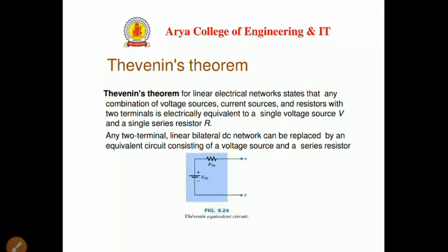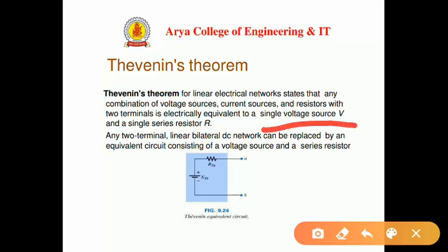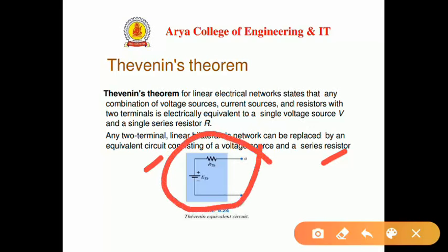Now moving to Thevenin's theorem, which is a very important theorem. Thevenin's theorem for linear electrical networks states that any combination of voltage sources, current sources, and resistors with two terminals is electrically equivalent to a single voltage source and a single series resistor. Any two-terminal linear bilateral DC network can be replaced by an equivalent circuit consisting of a voltage source and a series resistor.